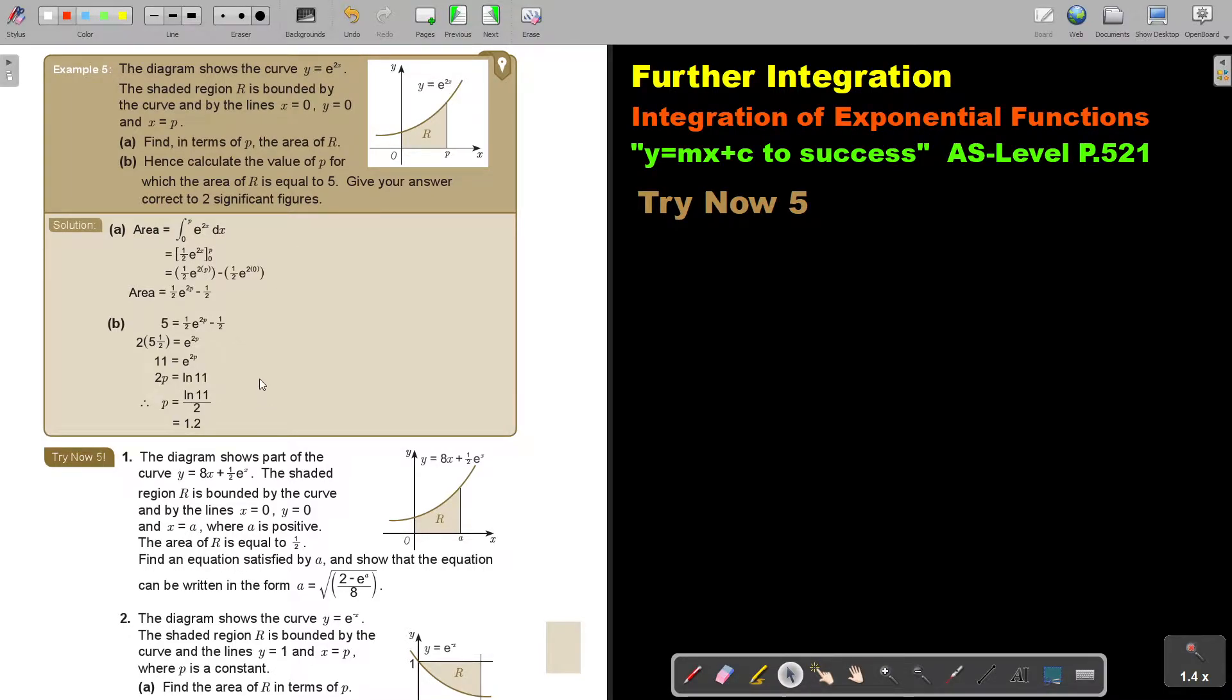Let's look at another example. The diagram shows the curve y equals e to the power of 2x. The shaded region R is bounded by the curve and by the lines x is 0, y is 0, and x is equal to p. Find in terms of p the area of R.